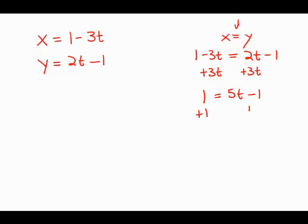Then I'm going to add 1 to both sides to get the 5t by itself. 2 equals 5t. Now I want to get the t by itself. I'm going to divide both sides by 5, and we get 2 fifths equals t. This is answer choice d.